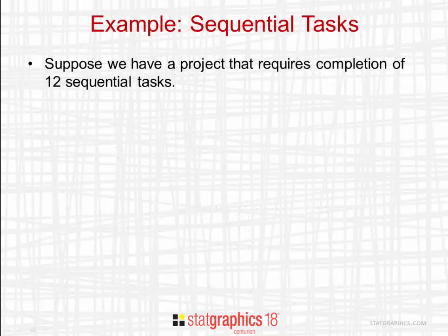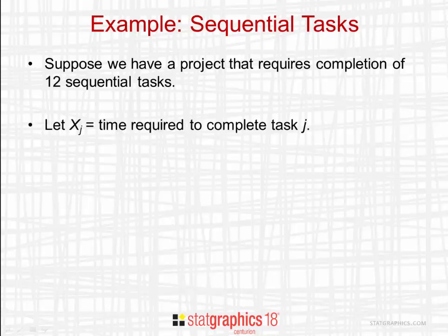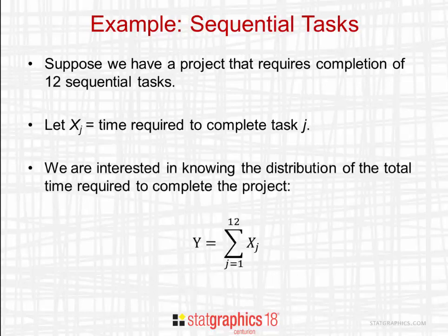The example in this video has to do with sequential tasks. Suppose we have a project that requires the completion of 12 tasks in sequence, one after the other. Let X sub J be the time required to complete task J. We're interested in knowing the distribution of the total amount of time required to complete the project.